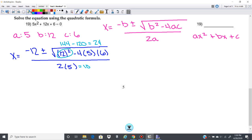2 times 5 is 10. So if I put this back into my form here, I've got negative 12 plus or minus the square root of 24 over 10. Okay, then I have to simplify it.